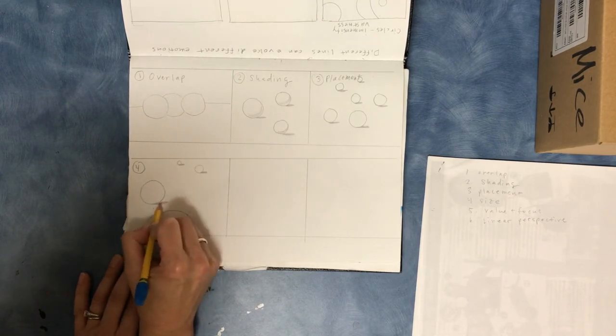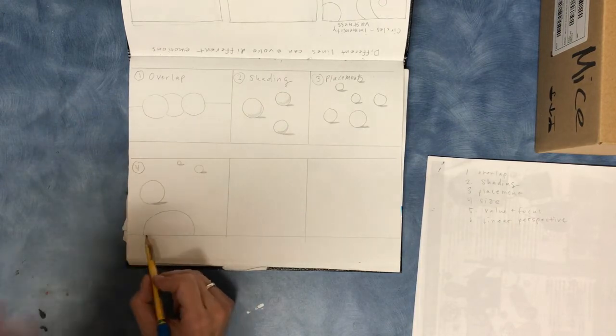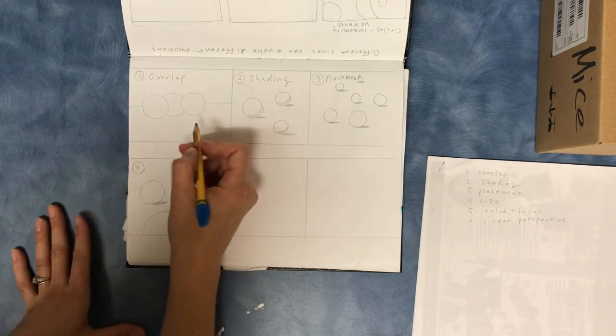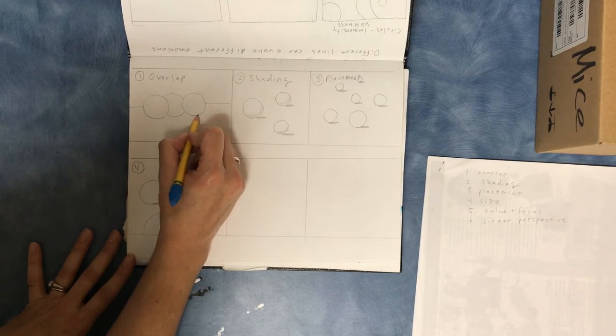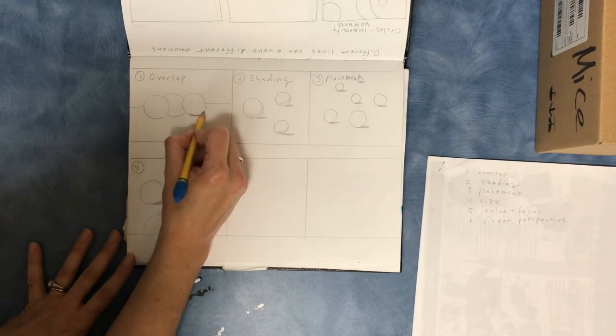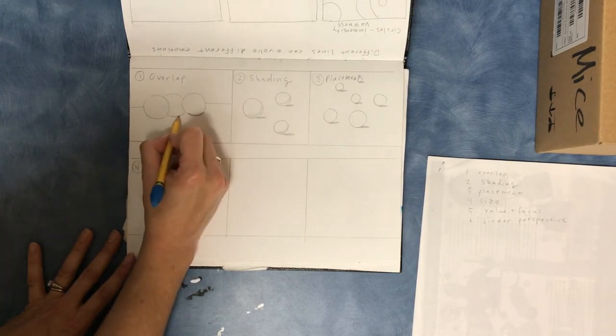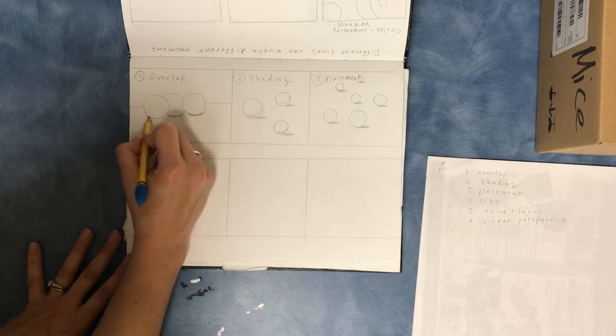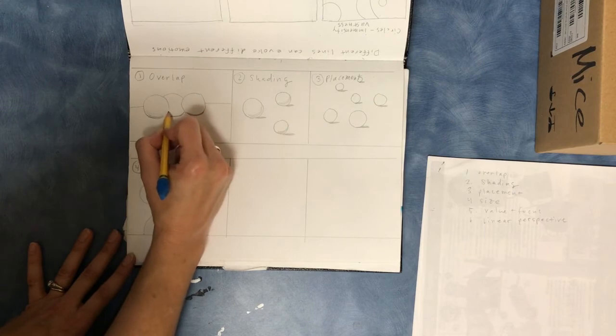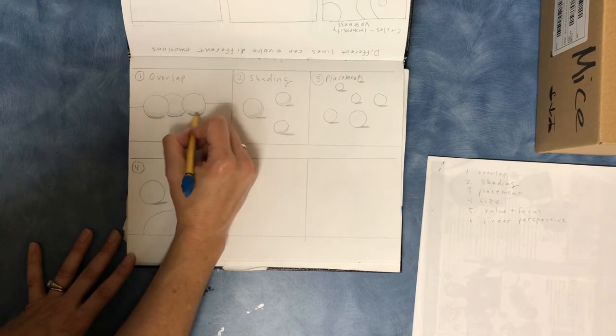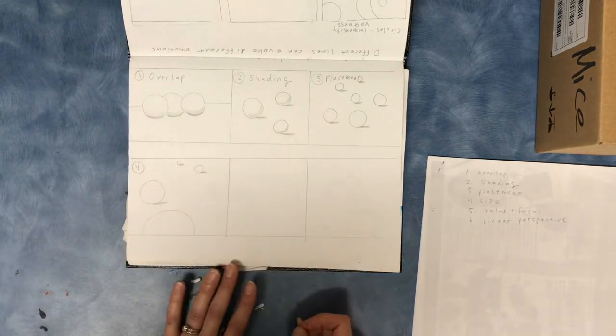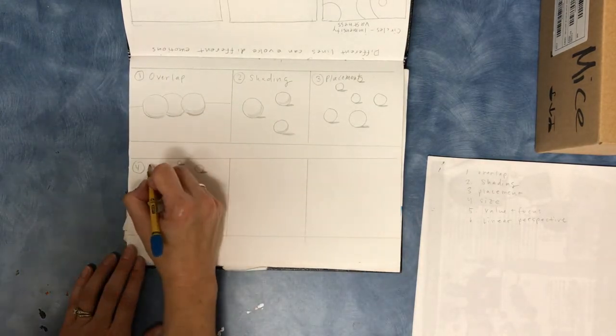And not on this one, right, because this is just the top. And if you want to go back and add a little shadow underneath here, that's fine. A little shadow on the bottom of that shape so it looks more like a sphere. So this one was size.